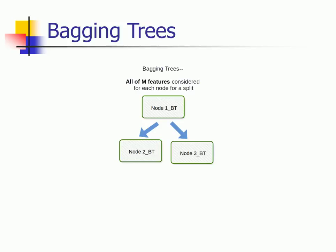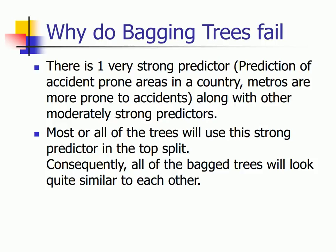Hopefully bagging does give a better result, but it still has some problems. Say for example you are predicting an accident prone area in a country. A feature like metros or where the city is located is a very strong predictor. When you have a very strong predictor in your model, bagging trees would fail miserably because all the decision trees you grow, even from different samples, would give out the same output — they will be highly correlated. So although variance is reduced, you still end up with highly correlated trees.